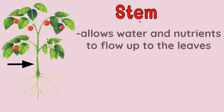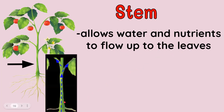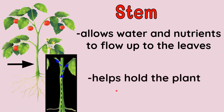Next, let's proceed to the stem. The function of the stem is to allow water and minerals, or nutrients, to flow up to the leaves. The stem allows water and nutrients to flow up through the stem to the leaves and to the different parts of the plant. Another function: the stem helps hold the plant so it will not fall.